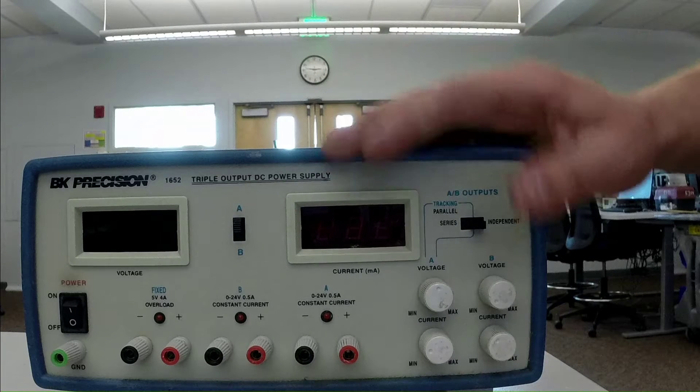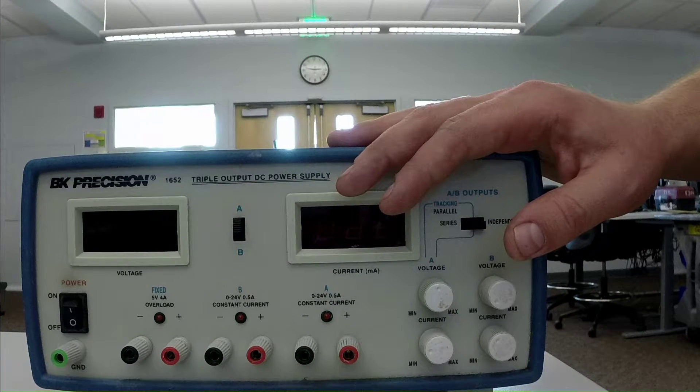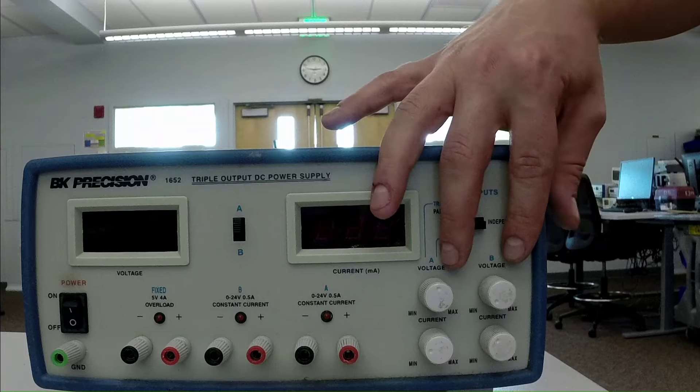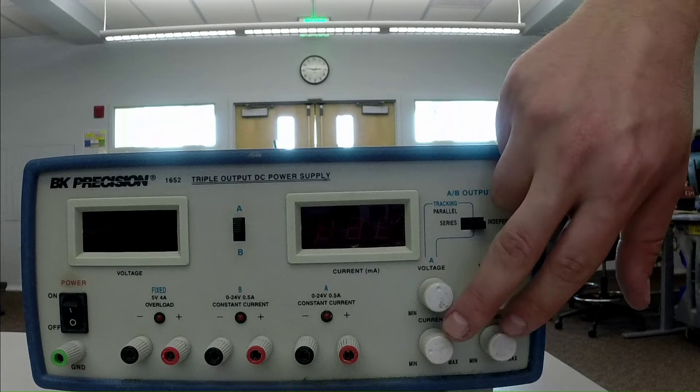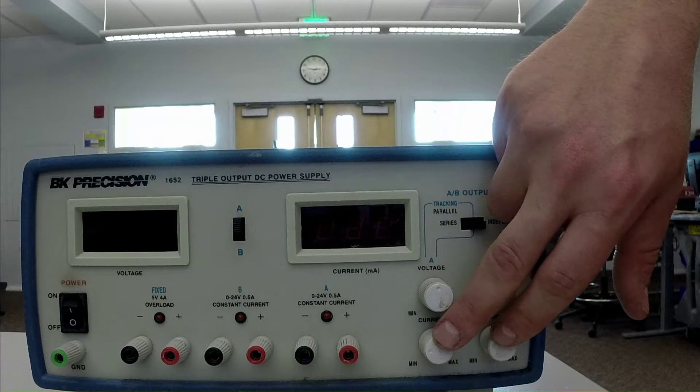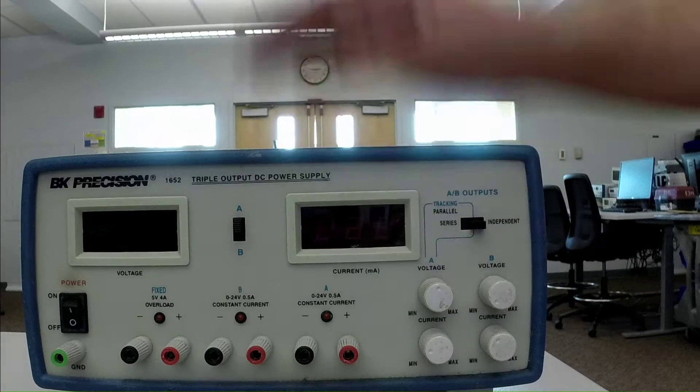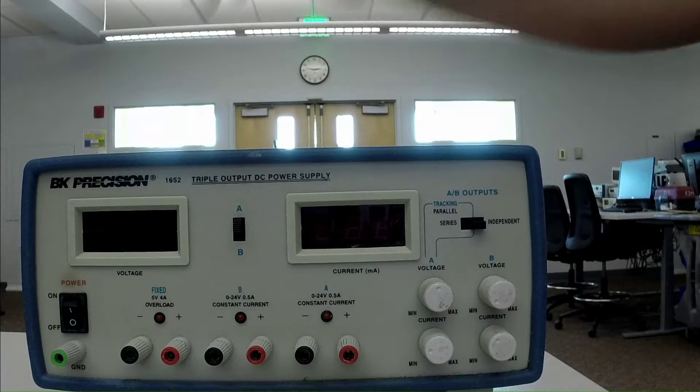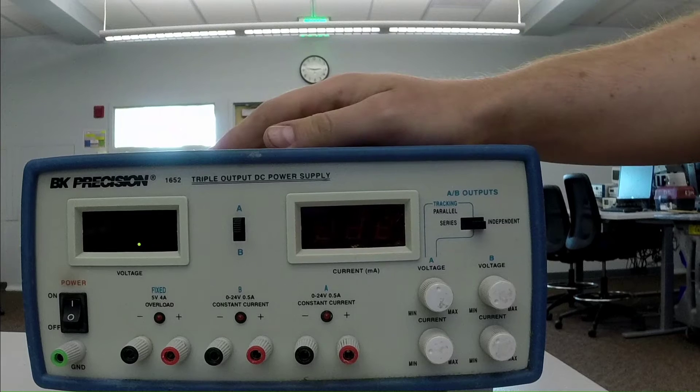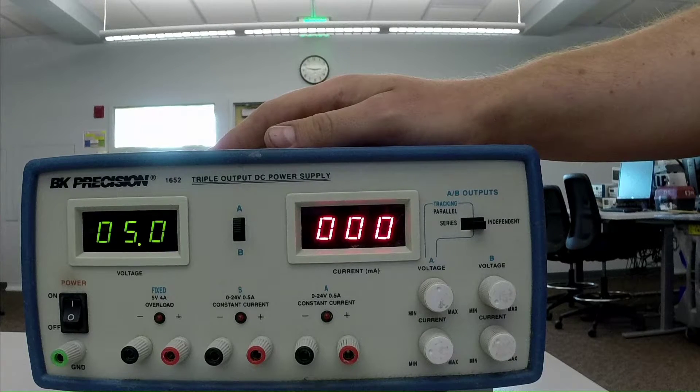And we can set the voltage that these channels are set to using the knobs over here. And we can adjust how much current those will provide also using these knobs down here. So let's go ahead and turn this on and we'll watch how this works. So when we power it up, the display should turn on.